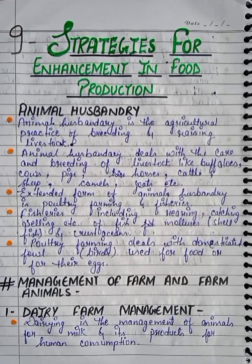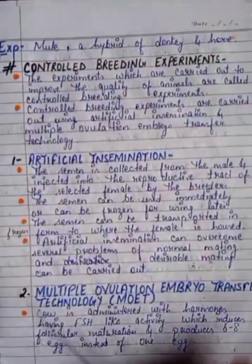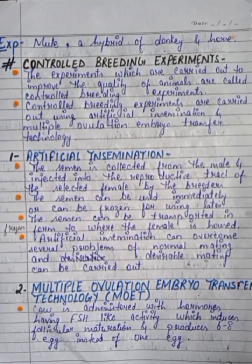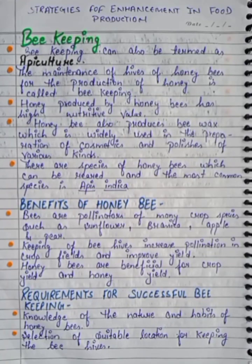Hey guys, welcome back to my YouTube channel Biologic Kingdom. We are doing Chapter: Strategies for Enhancement in Food Production. In the last video, that means Part 1 of this chapter, we discussed animal husbandry, dairy farm management, poultry farm management, animal breeding, types of breeding — inbreeding and outbreeding, types of outbreeding, controlled breeding, artificial insemination, and multiple ovulation embryo transfer technology (MOET). Today we will do beekeeping.